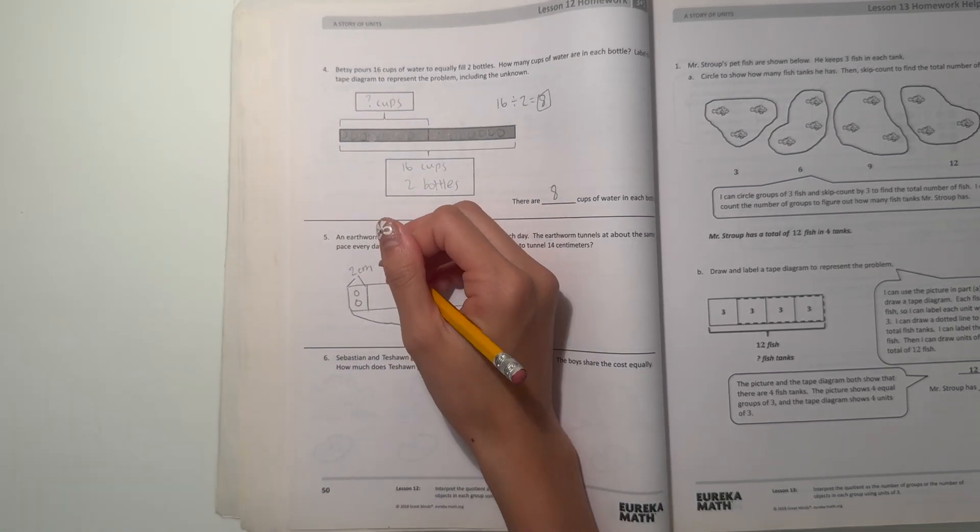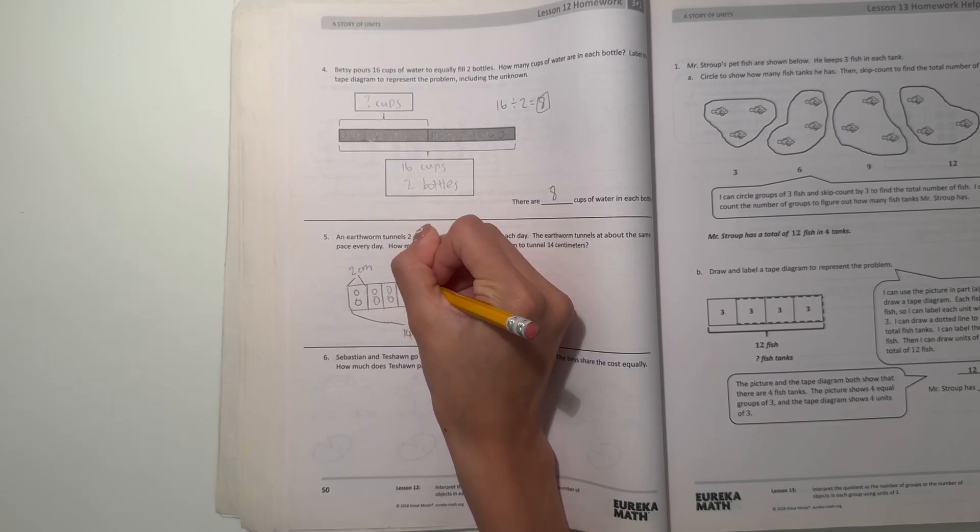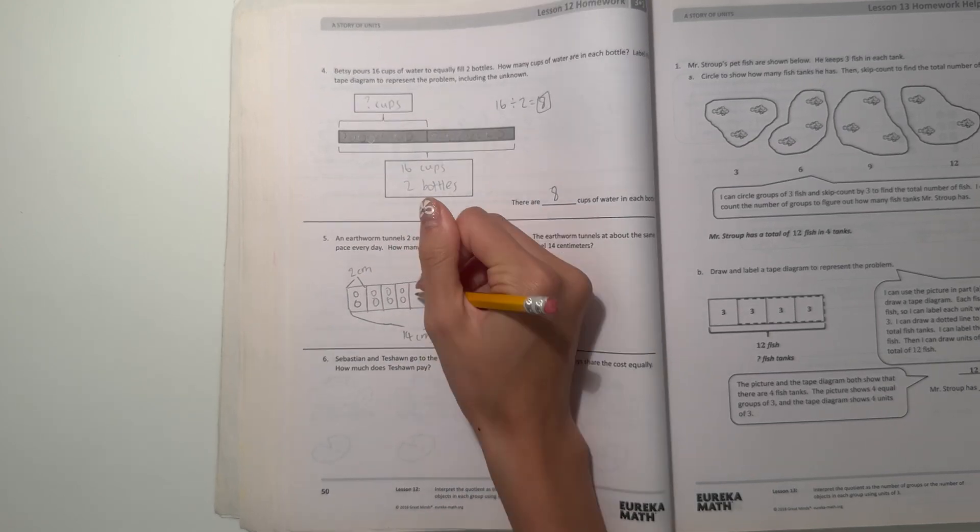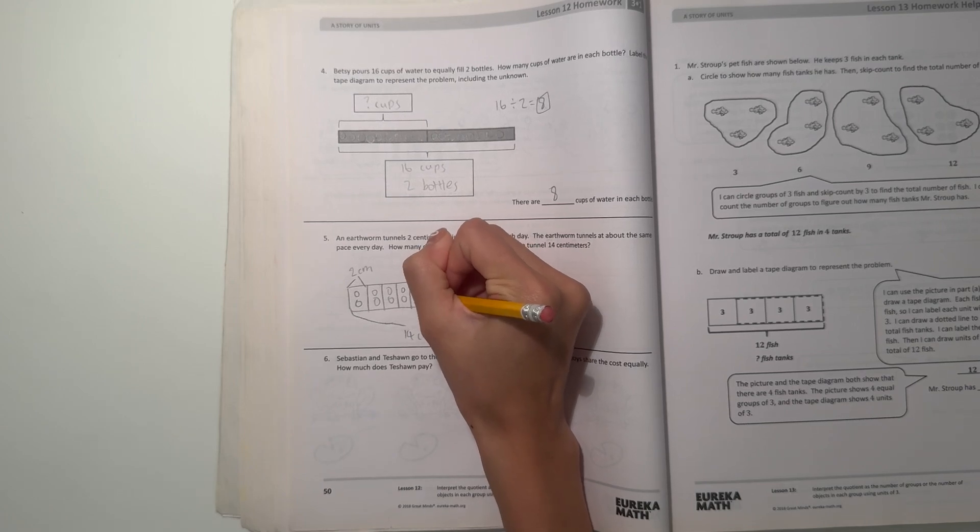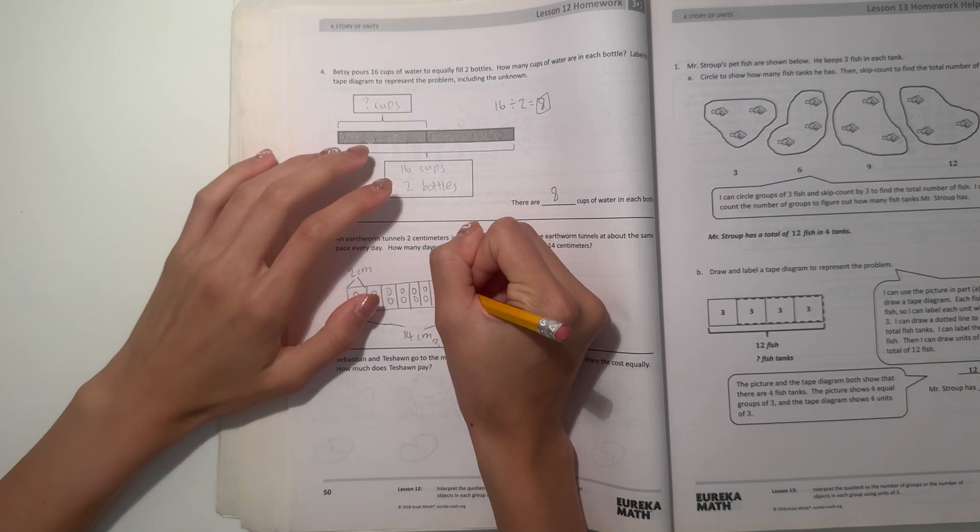So we have 1, 2, 3, 4, 5, 6, 7, 8, 9, 10, 11, 12, 13, 14.